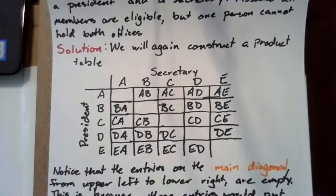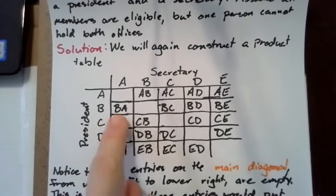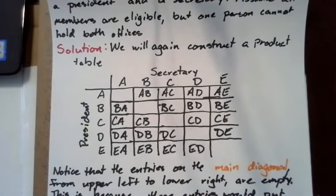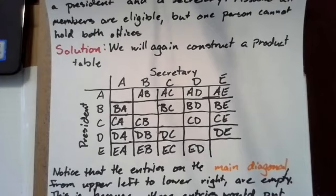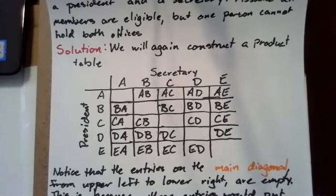That's because those entries would put the same person in both offices. So instead, we just have A-B, A-C, A-D, A-E, B-A, B-C, B-D, B-E, and so on, for a total of 20 combinations that give us different president and secretary pairs.